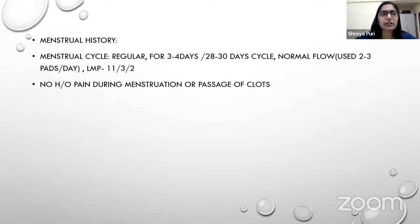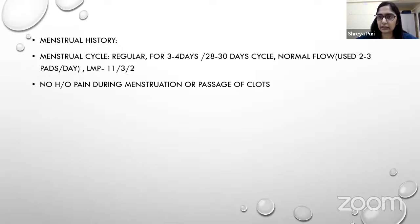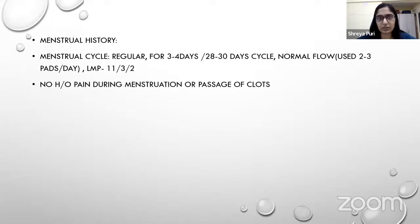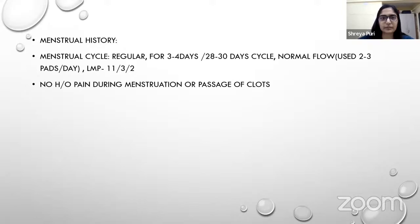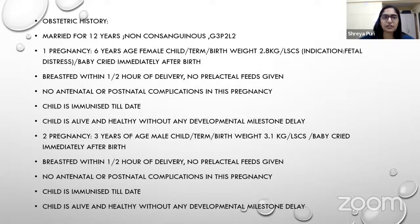Menstrual history: previously regular cycles, periods for 3 to 4 days in a 28 to 30 day cycle, normal flow using 2 to 3 pads per day, no dysmenorrhea. Last menstrual period was 11th March. No history of passage of clots. The instructor calculates the patient was 4 weeks and 5 days of gestation.